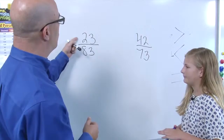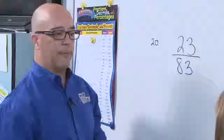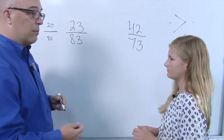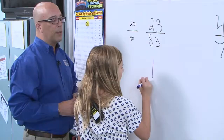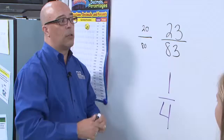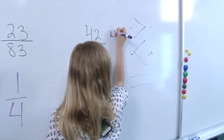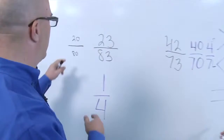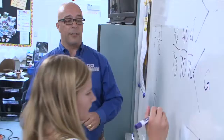What we could do instead is estimate. So one thing I'd suggest is estimating. 23 is about 20, and 83 is about 80. If we had 20 over 80, what would that simplify to? 2 over 8. And if you simplify even more? 1 over 4. So let's put 1 over 4 as our estimate there. Now for the other fraction: 42 over 73 estimates to 40 over 70, which simplifies to 4 over 7 — just get rid of the zero. Go ahead and write 4 over 7 as your estimate.